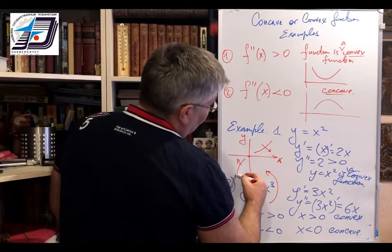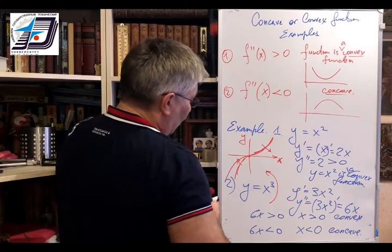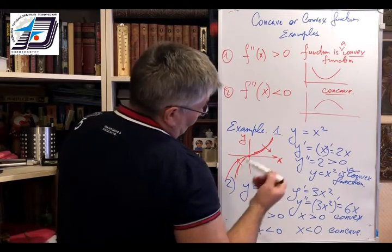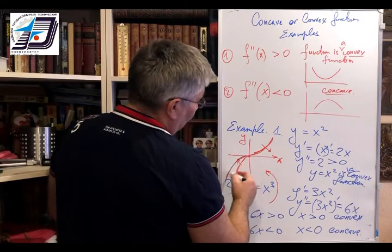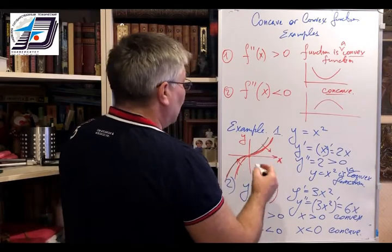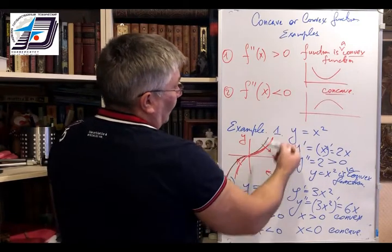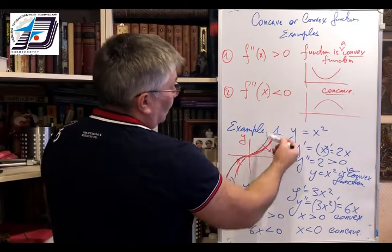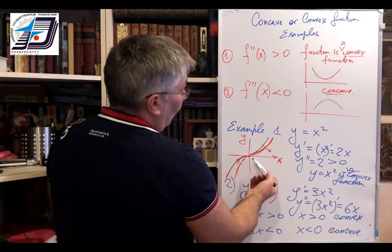So it means that this function has a very schematical view like this curve. I use this red, well, red, black ink. And you can see that here slope looks down, it is a convex function when x is negative, it is a concave function.